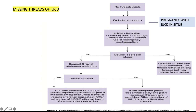If the pregnancy test is positive and the IUCD is located inside the uterus along with the pregnancy, offer removal of the IUD before 12 weeks. If not removed, the risk of miscarriage is 1 in 2, compared to the background risk of 1 in 5.